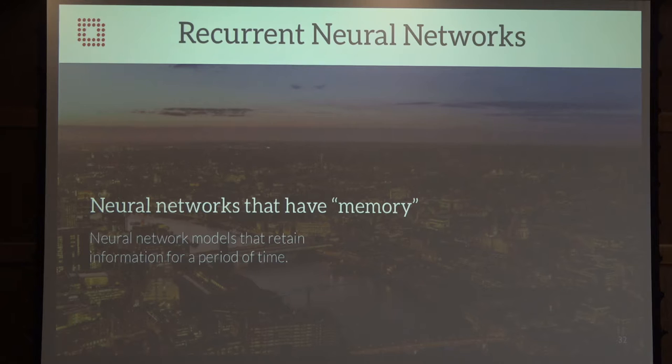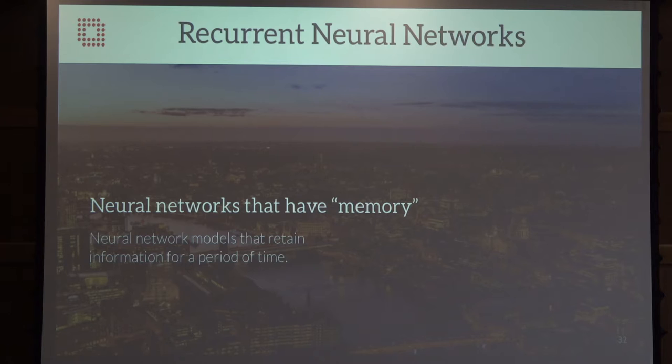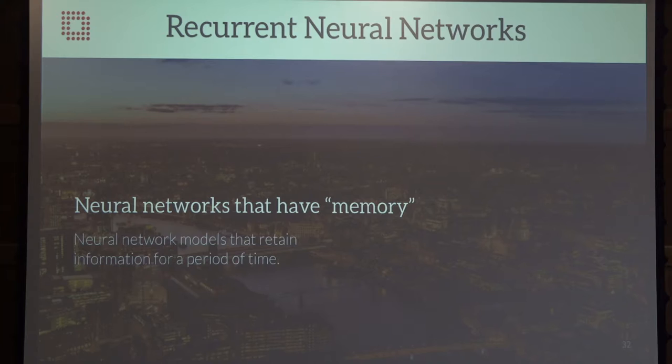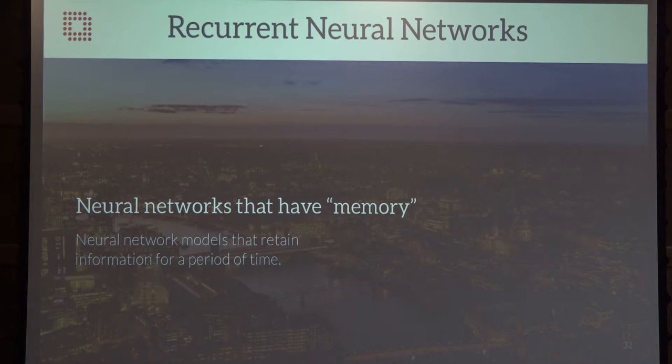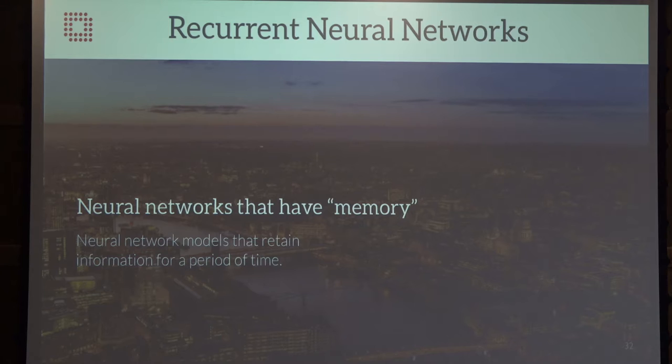That's part one. Part two is on recurrent neural networks, and then I'll bring the two parts together. Neural networks — for those who haven't used them — you've probably heard about them in the news, lauded as artificial intelligence or a new wave of machine cognition. But I would argue they are classification models that happen to work quite well. There have been recent advances in computing power and training techniques that have bumped up accuracy. We're going to talk about recurrent neural networks, which are neural networks that have memory.